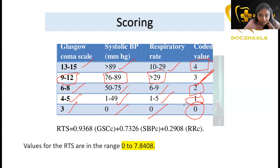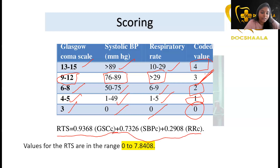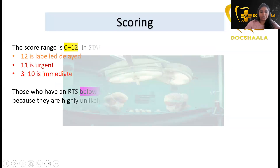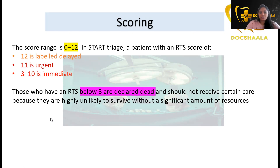RTS is calculated using a weighted formula, giving a range of 0 to 7.8408. However, when calculated using the coded values provided, the value of RTS ranges from 0 to 12.